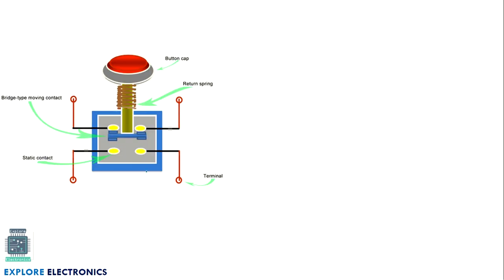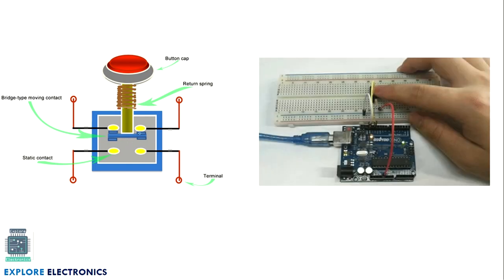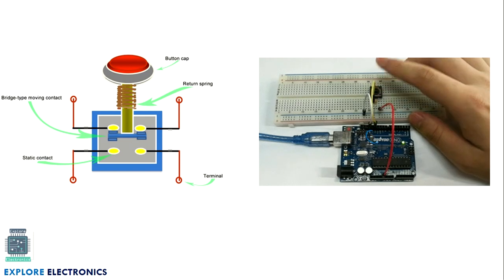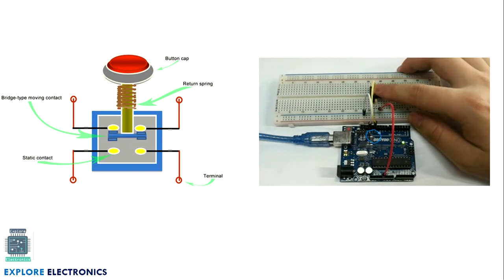This is the physical structure of the push button switch. It has a spring to release the button once it is pressed, and there are four contact points where it makes or breaks the circuit. This is a practical example of the push button connected with a controller. Once it is pressed, there will be a light glow, and when it is released the light will be off.